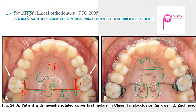Another type is the Burstone palatal arch. Instead of molar tube attachments, it uses brackets — one on the left and one on the right — similar to edgewise brackets. The wire runs horizontally along the palatal concavity without any loop, and unlike the Goshgarian and Zachrisson arches which use round wire, the Burstone palatal arch uses a rectangular cross-section TMA wire.